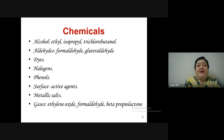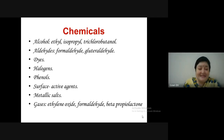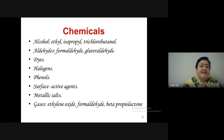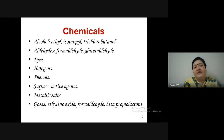Chemical agents used for disinfection include alcohols (ethyl, isopropyl, and thylchlorobutanol), aldehydes (formaldehyde and glutaraldehyde), dyes, halogens, phenols, surface active agents, and metallic salts. For sterilization by gaseous fumigants, ethylene oxide, formaldehyde, and beta-propiolactone (BPL) are used.